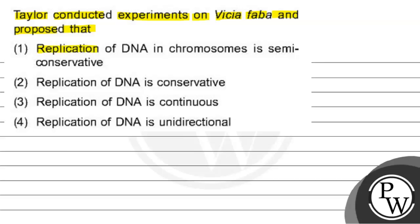One: replication of DNA in chromosomes is semi-conservative. Two: replication of DNA is conservative. Three: replication of DNA is continuous. Four: replication of DNA is unidirectional. तो अगर हम Taylor का experiment को देखे,